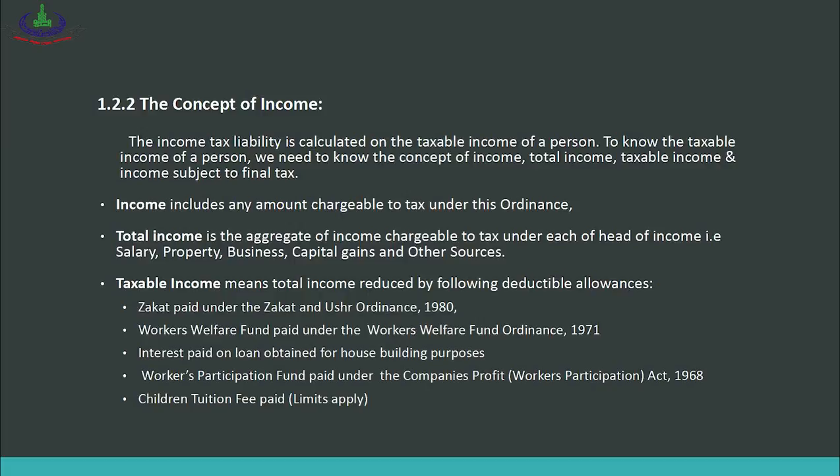The first head of income is salary. The second head is income from property. The third head is business income — profit from your business. The fourth head is capital gains — gain from buying and selling various assets. Lastly, any income that cannot fall under the first four heads is classified under other sources. After total income, the concept to understand is taxable income. Taxable income is the income on which we pay tax, defined as total income reduced by the following deductible allowances.